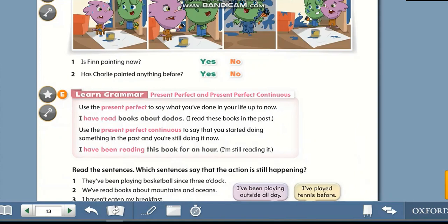Then, present perfect continuous. Use the present perfect continuous to say that you started doing something in the past and you are still doing it now. For example, I have been reading this book for an hour. I'm still reading it.